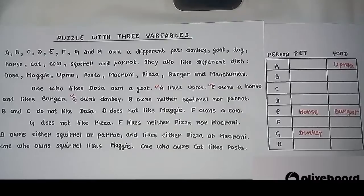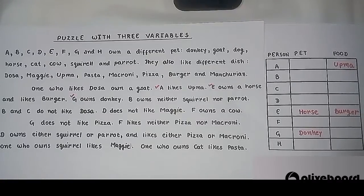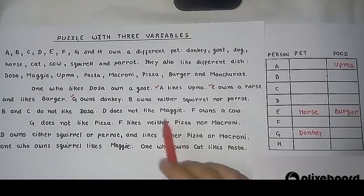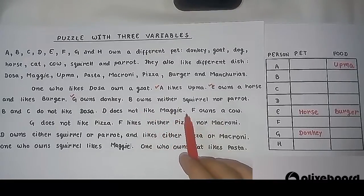The next statement says B owns neither squirrel nor parrot. As soon as you see a negative statement containing words like neither, nor, not, or none, you have to leave these sentences for now, because we use them after we are done with positive sentences. Similarly, B and C do not like Dosa — a negative statement. And D does not like Maggi — again negative. So we are not using any negative statements for now.